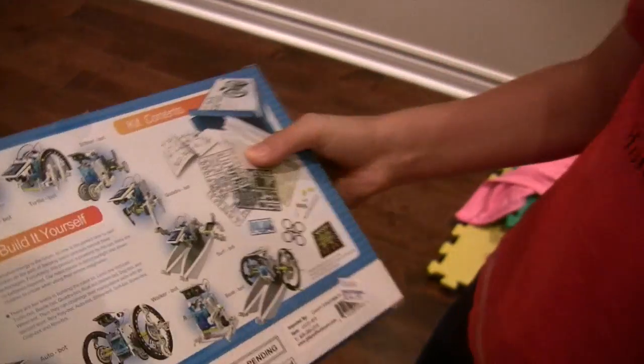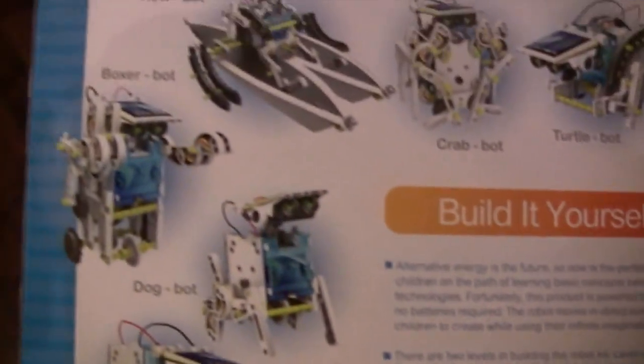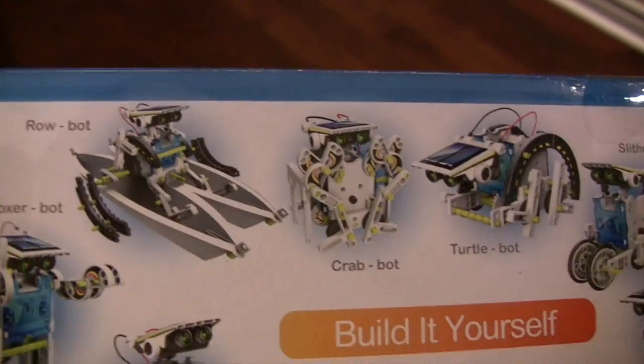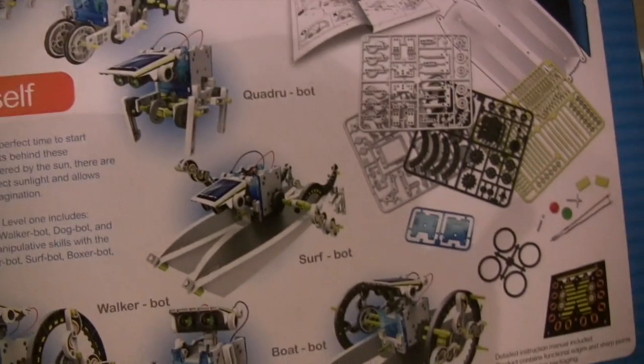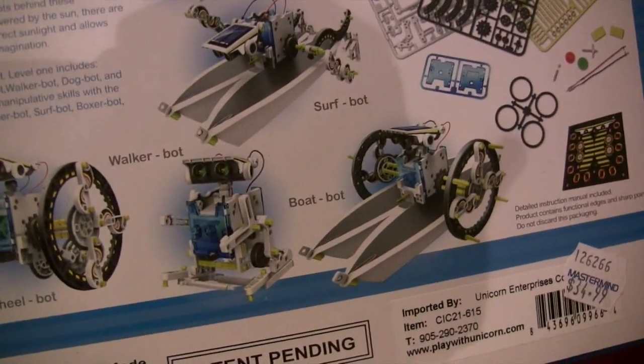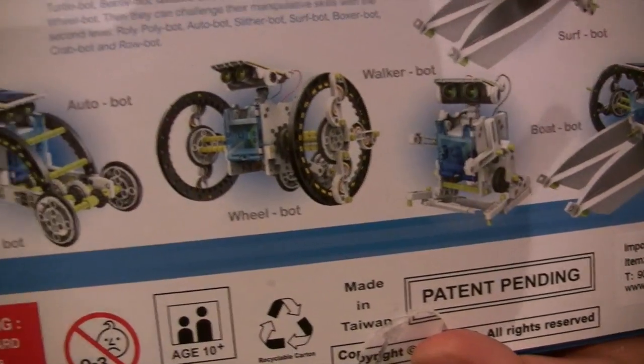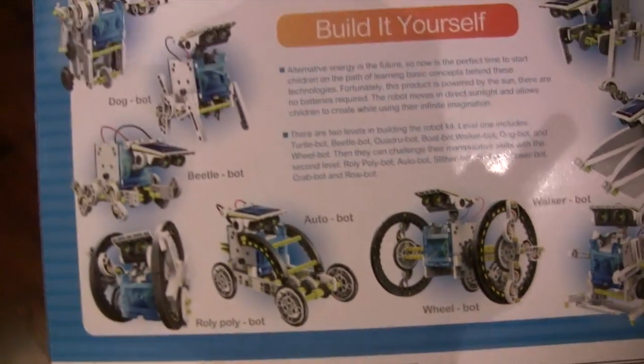As you can see on the back, there's a BoxerBot, a RowBot, there's a CrabBot, a TurtleBot. They're all different models and half of them are put into one section called Level 1, and half of them are put into another section called Level 2.